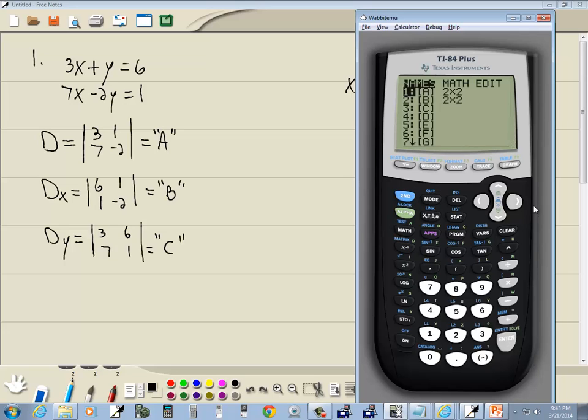Then I'll go back to my matrix menu, second x to negative 1. Go over to edit, down arrow to C, press enter on it. And I'll put 2 by 2.